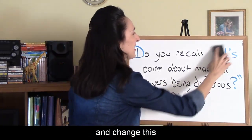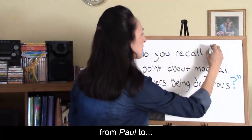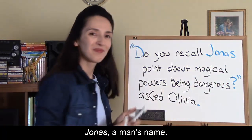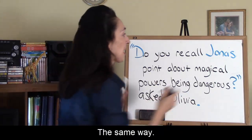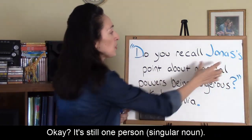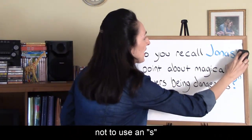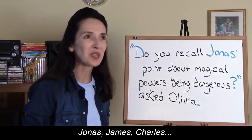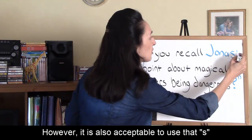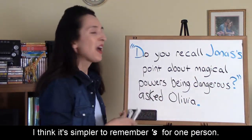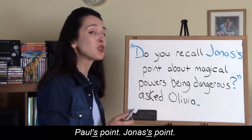Let's get a little tricky and change this from Paul to Jonas — a man's name. How do we show possession now? The same way: apostrophe S. It's still one person. Some people feel it's acceptable not to use an S when a name ends with S — Jonas, James, Charles. However, it is also acceptable to use apostrophe S. I think it's simpler to remember apostrophe S for one person: Paul's point, Jonas's point.